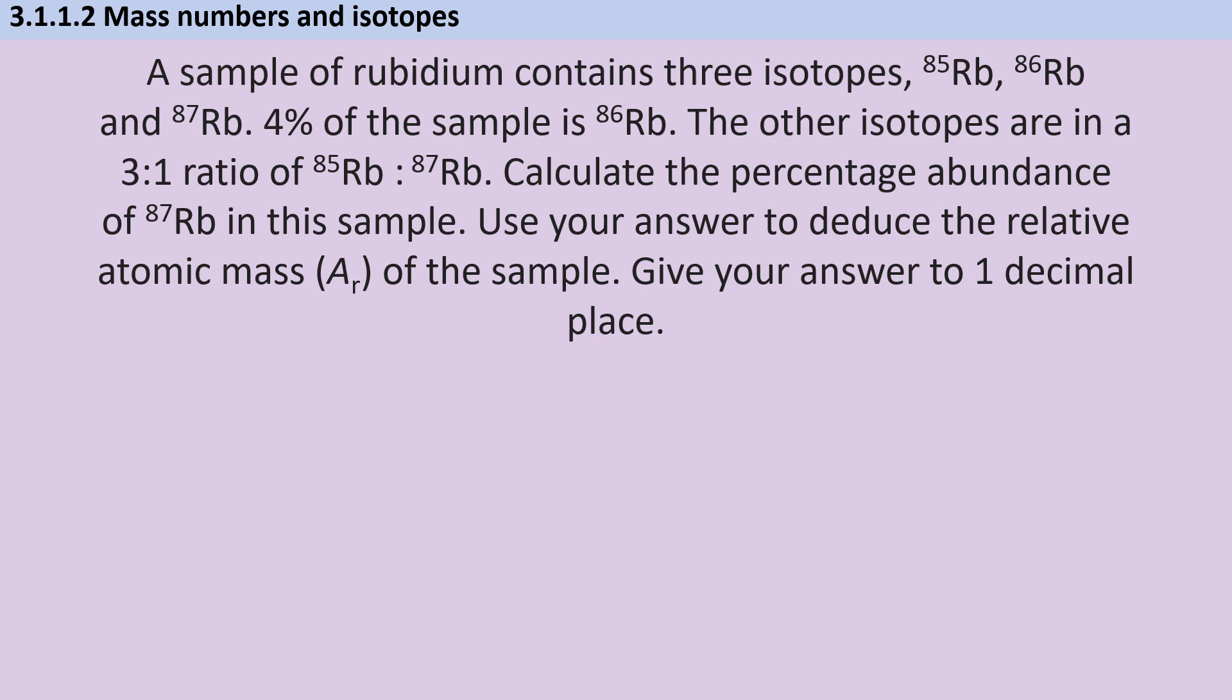Calculate the percentage abundance of 87 rubidium in this sample. Well, we're going to have to do that anyway, but they're explicitly calling out that we need to do it and write it down somewhere. Then use your answer to deduce the relative atomic mass of the sample. And then they're also reminding us, as we said at the start, to give our answer to one decimal place.